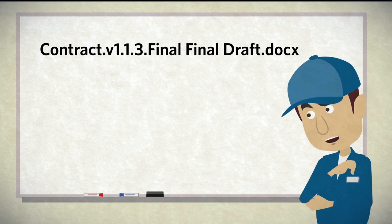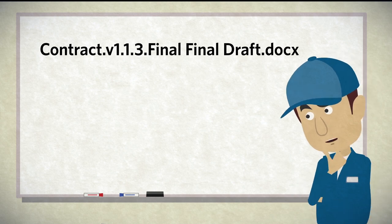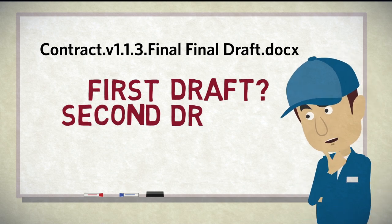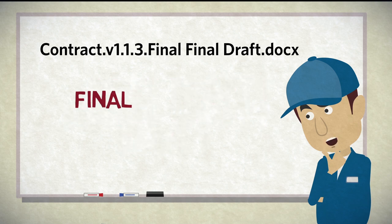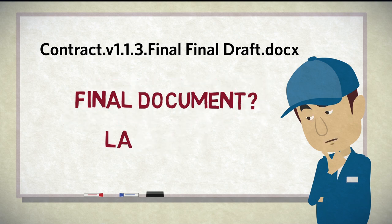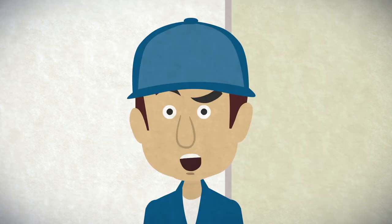What is the revision status? Is it a first draft, second draft, or final? Document 1's file name has complex versioning, but the addition of 'final final draft' makes it unclear — is it a final document or the last draft before the final? Keep it simple! We need an efficient method to separate drafts from final documents.